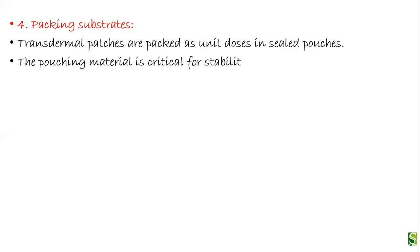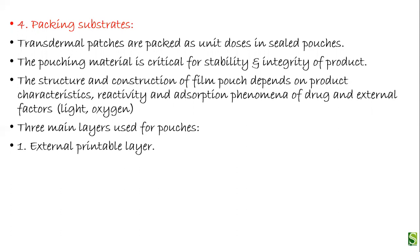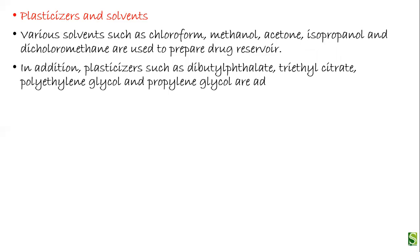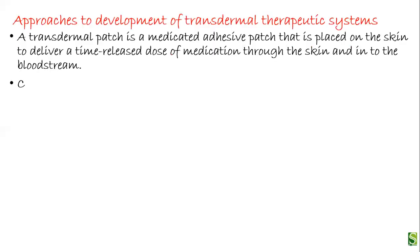Polyester, polyethylene, and co-extruded films are also used as backing materials. Transdermal patches are packed as unit doses in sealed pouches. The pouching material is critical for stability and integrity of the product. Three main layers are used for pouches: an external printable layer, an aluminum foil layer, and an internal plastic heat-sealable layer. Other excipients include solvents such as chloroform, methanol, acetone, isopropanol, and dichloromethane for preparing the drug reservoir, and plasticizers like dibutyl phthalate, triethyl citrate, polyethylene glycol, and propylene glycol to provide plasticity.